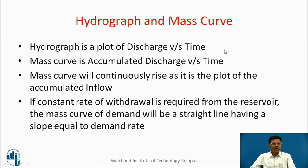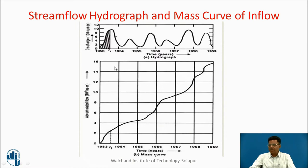Now let us discuss hydrograph and mass curve. A hydrograph is a plot of discharge versus time. A mass curve is accumulated discharge versus time — it will continuously rise as it is the plot of accumulated inflow. When we go on accumulating flow on the y-axis with respect to time on the x-axis, we get this mass curve or accumulated inflow curve.